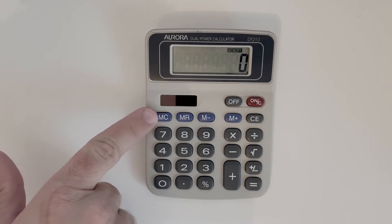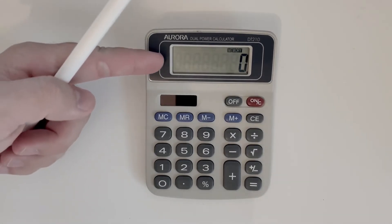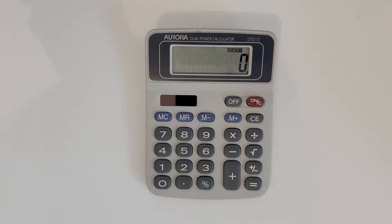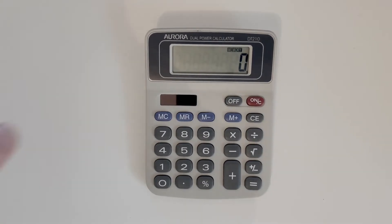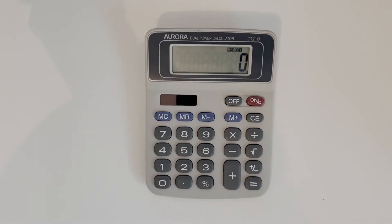You have MC which is memory clear, MR which is memory recall, M minus which subtracts the number in the scratch pad from the number in memory—we don't use this in the exam—and M plus which adds numbers to the memory function. We don't really use the plus side for adding; we just use it to save numbers in memory.